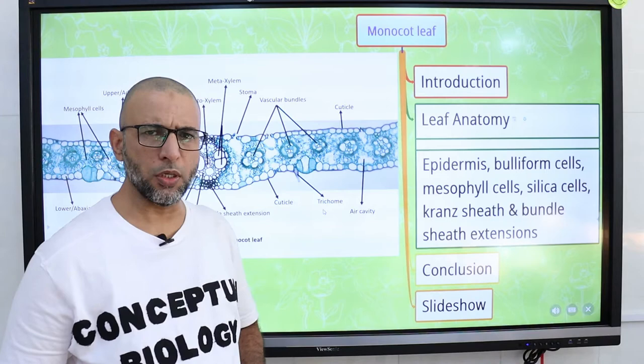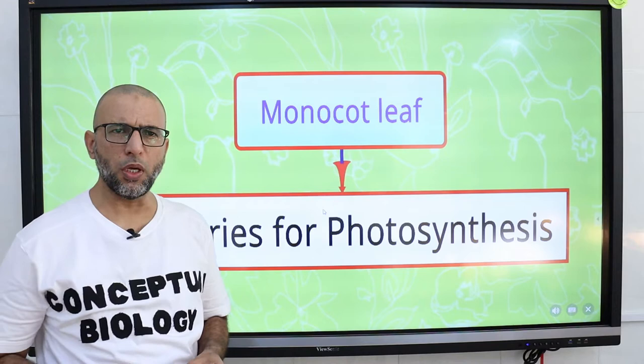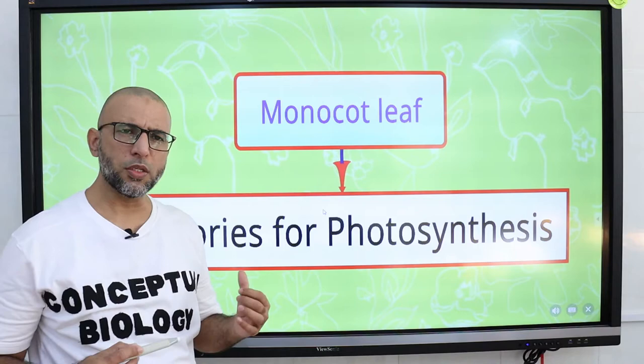A leaf is a highly organized factory, an organ constructed of several kinds of specialized tissues, each of which has its own duties. The product of this factory is no less than the food which supports nearly all life on earth. In this lesson I will explore the monocot leaf.